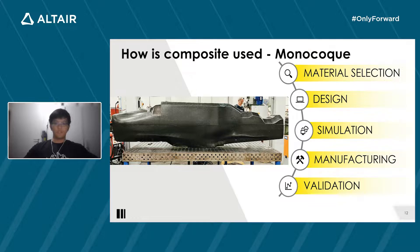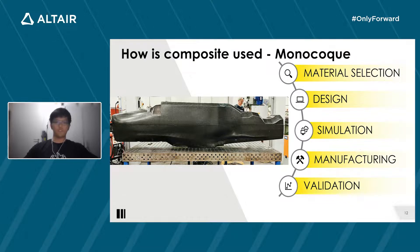Once the laminate is defined, each ply shape can be exported for laser projection data and flattened ply shapes. The laser projection is used during the manufacturing process to allow precise positioning of the ply shapes. The flattened pattern is cut in the NC cutter to obtain the ply shapes.